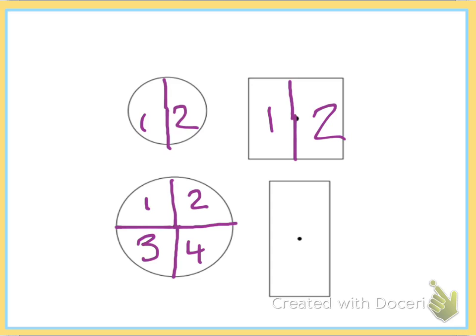We know that we call it quarters whenever there's four parts because we know that it takes four quarters to make a dollar. And also another way we can say it is fourths because there's four pieces: one, two, three, four.